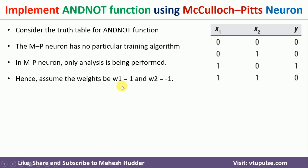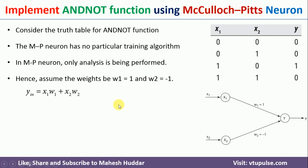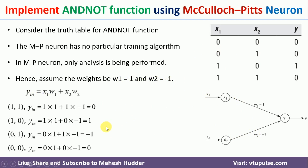Now I will modify the weights: w1=1 and w2=-1. This is how the neural network will look. Again we find the net input y for all possible inputs. For (1,1): 1×1 + 1×(-1) = 0. For (1,0): 1×1 + 0×(-1) = 1. For (0,1): 0×1 + 1×(-1) = -1. For (0,0): 0×1 + 0×(-1) = 0.